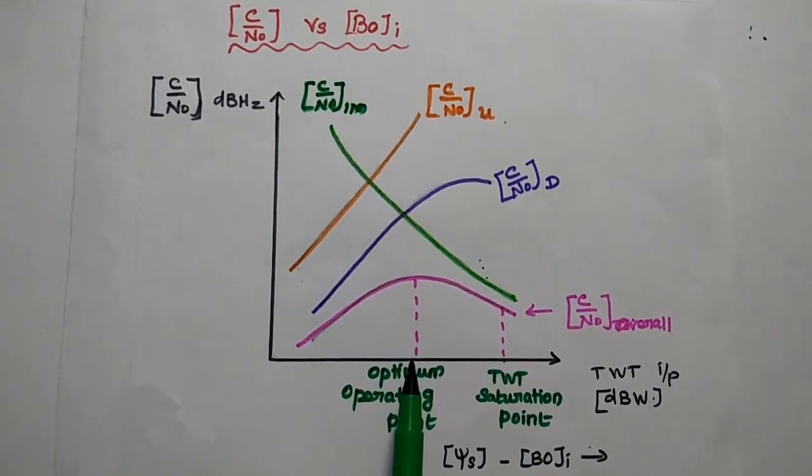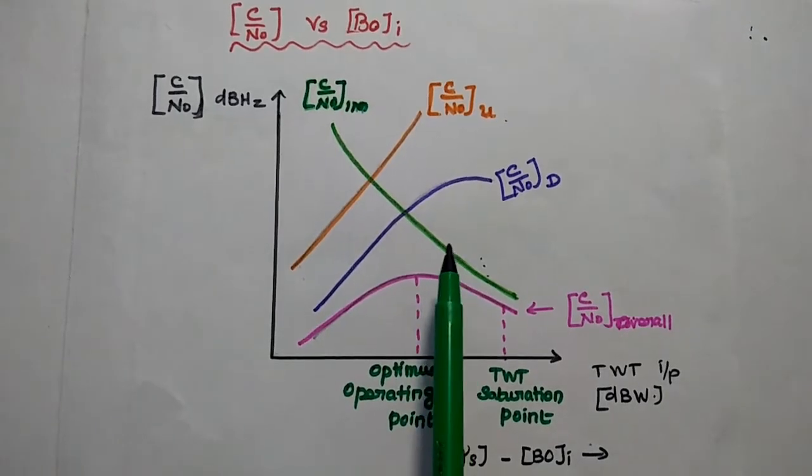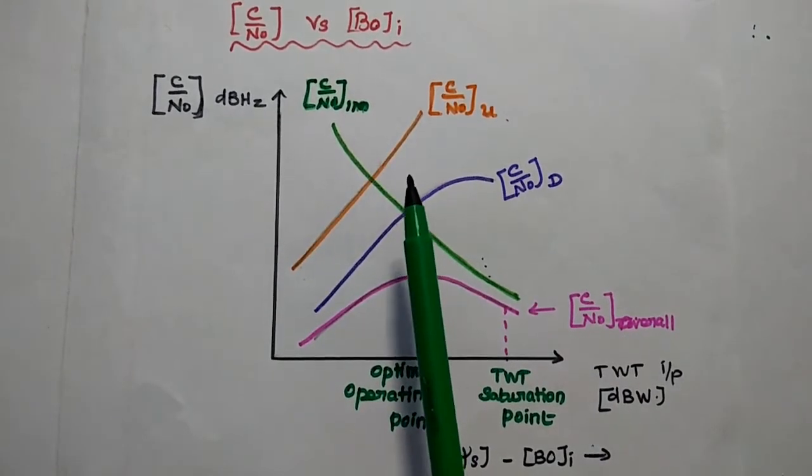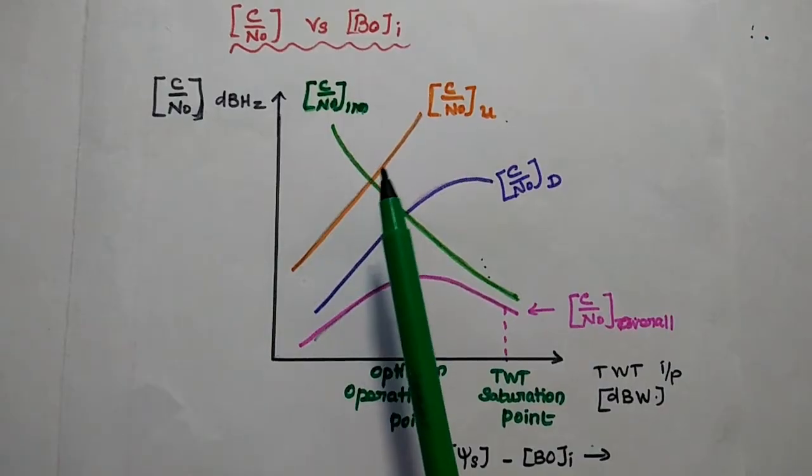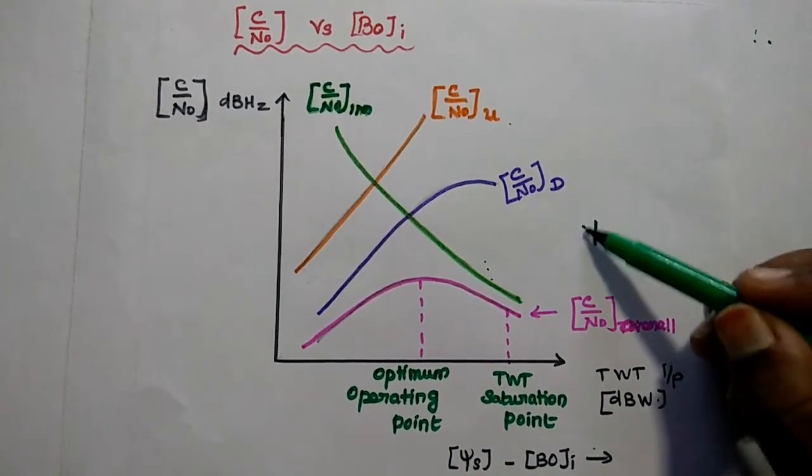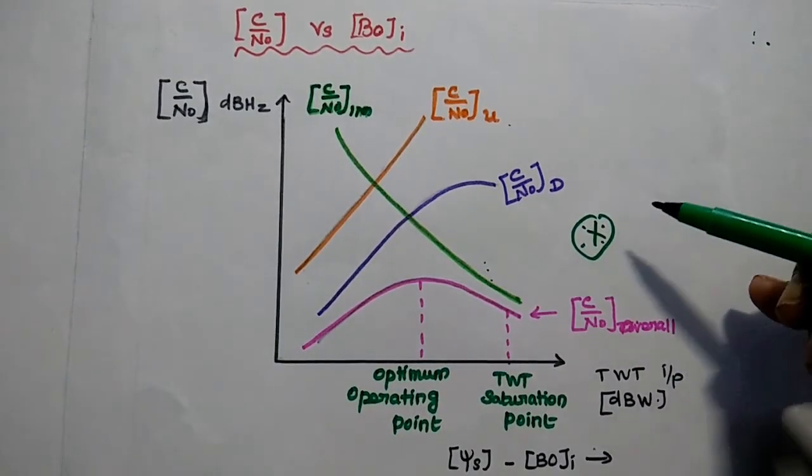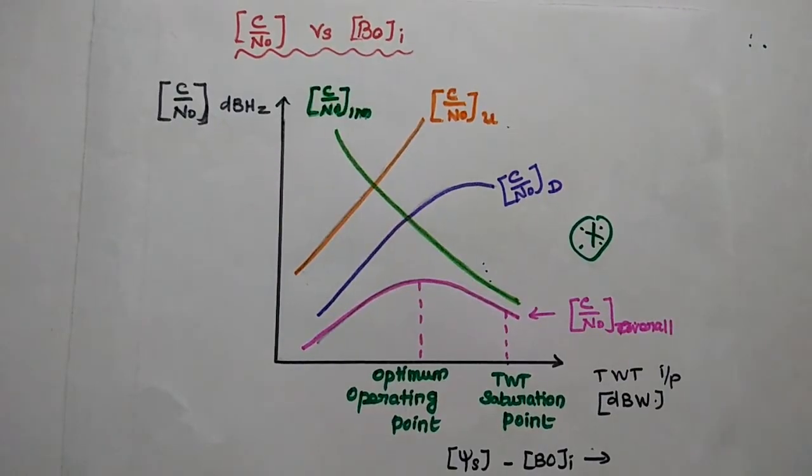We can get the optimum operating point which is having the maximum value of this downlink as well as uplink as well as intermodulation. This is very important to analyze the carrier to noise density for intermodulation as a function of input back-off.